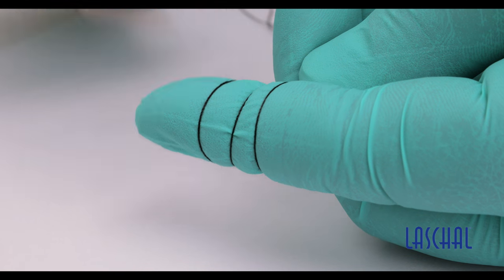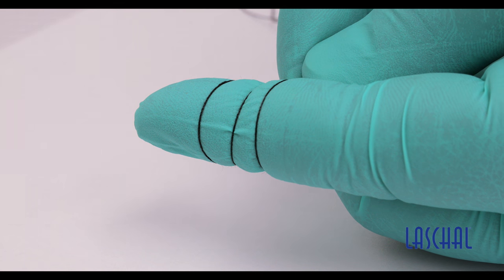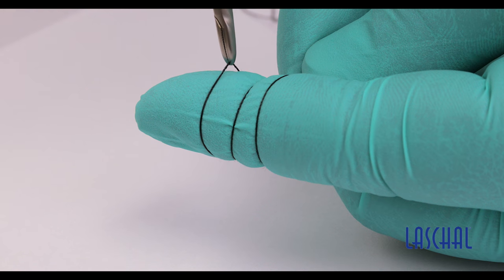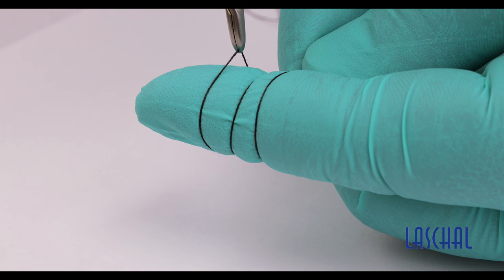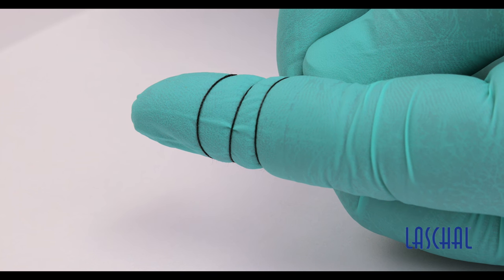The traditional means of removing a suture is to either sneak a pair of scissors underneath or to use forceps to lift and create some space so that a pair of scissors can be fit to cut the suture.